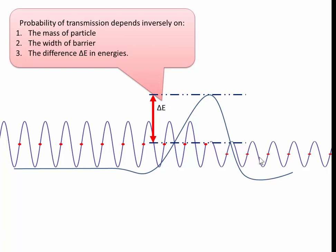The width of the barrier—if it's a large potential barrier, it's not easy for it to get across. And it also depends on the potential difference in the energies. If it's a huge difference in energies, it's not likely to get across.